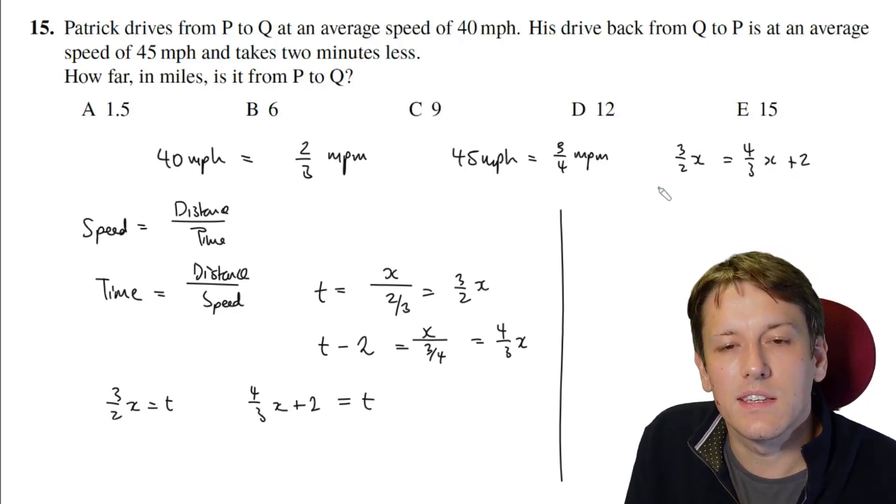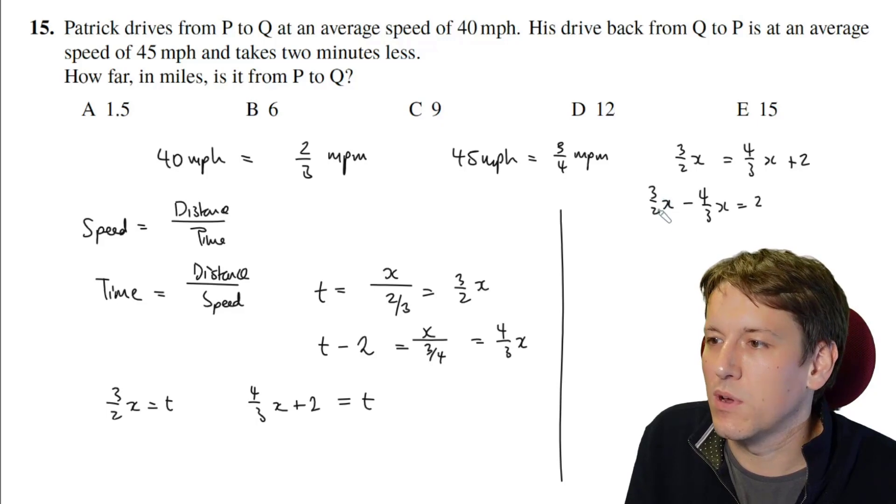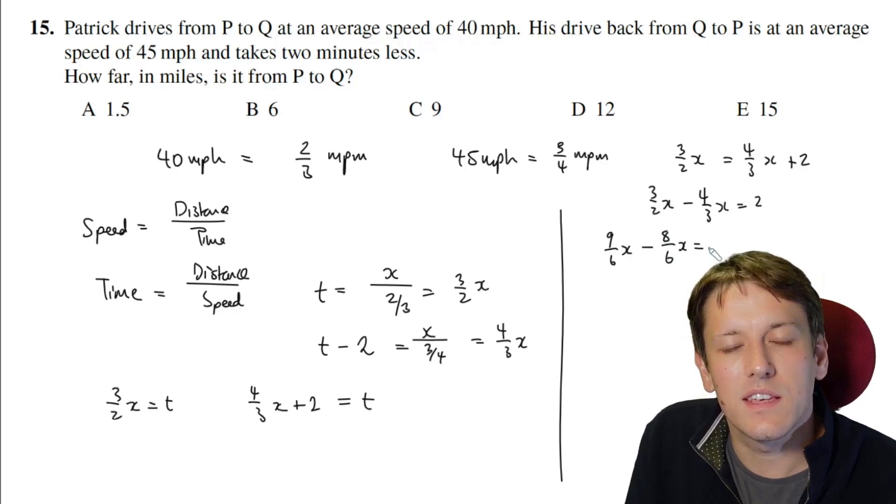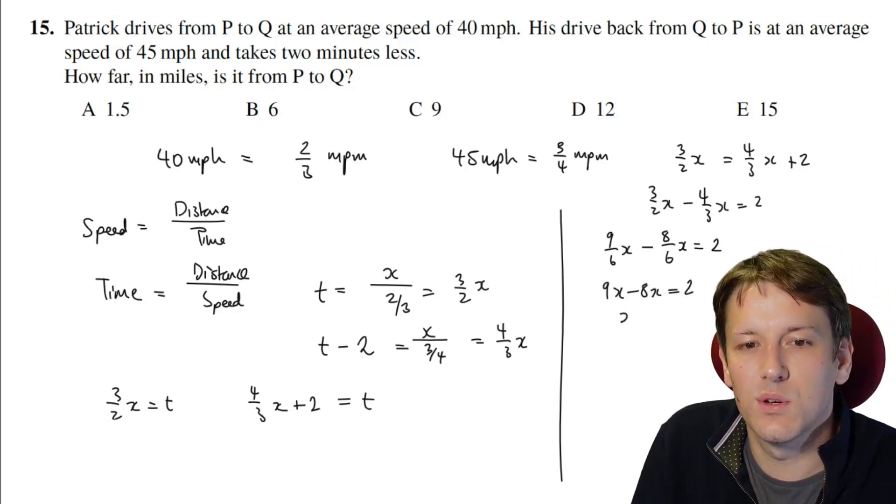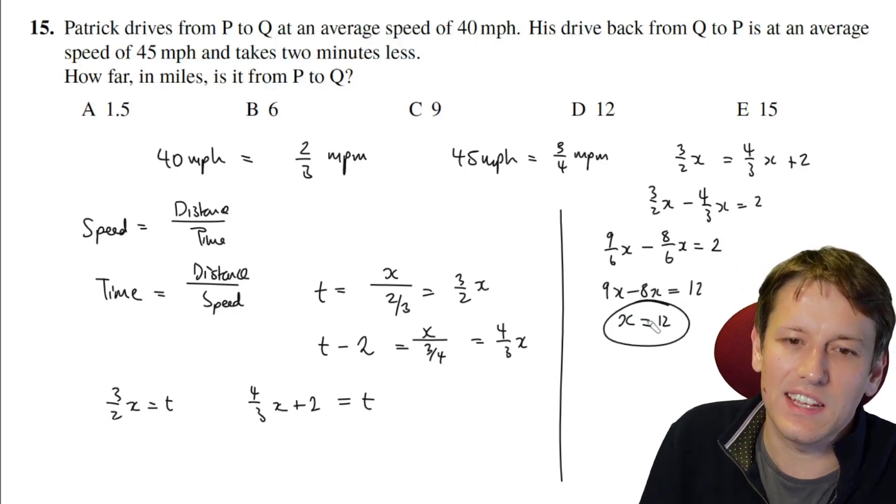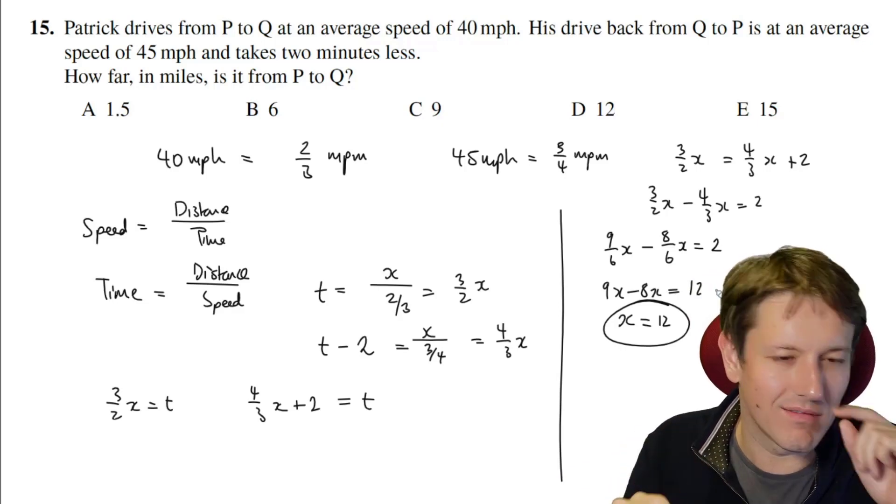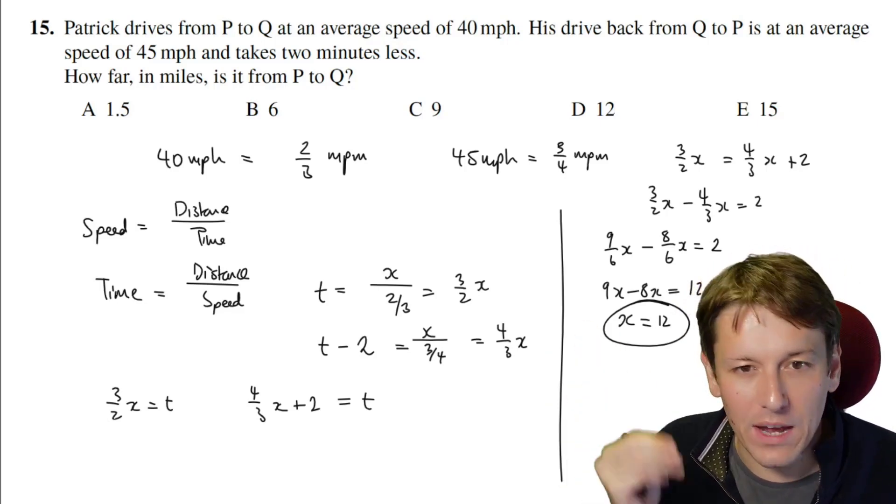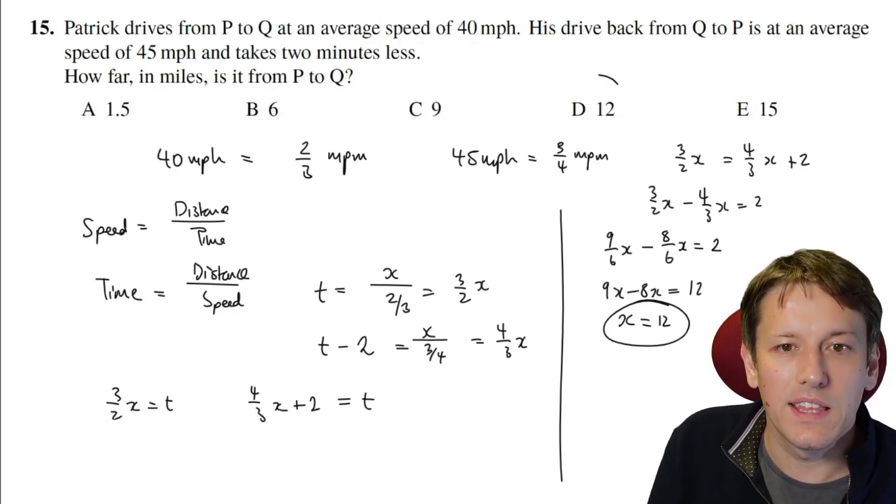So I just need to say, to get x, well, I've got three over two x minus four thirds x is equal to two. If we put these both as sixths, then that's nine sixths x minus eight sixths x is equal to two. So if I just multiply both sides of this equation by six, I just get nine x minus eight x equals 12. And nine x minus eight x is equal to x. So the distance x is equal to 12. You might be able to do this algebra slightly more quickly and efficiently than I've done it there, and different ways of rearranging things here. But the idea here is that you want to write down two equations, whether you do it in hours or minutes or whatever, make sure it's consistent, eliminate t, and then you'll find the answer. And the answer here then is d, 12.